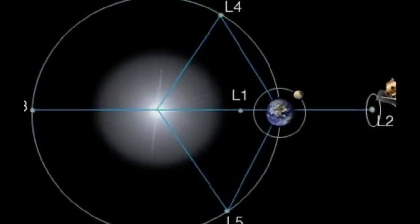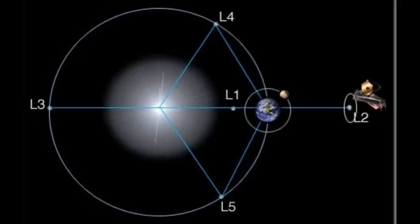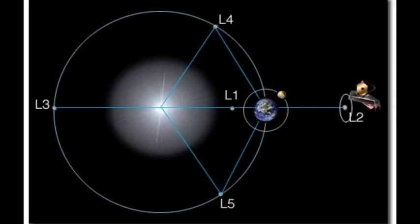NASA has utilized Lagrange points, most notably with the James Webb Space Telescope, which orbits the Sun at Earth's L2 Lagrange point, allowing it to stay in line with Earth's orbit with minimal fuel usage.